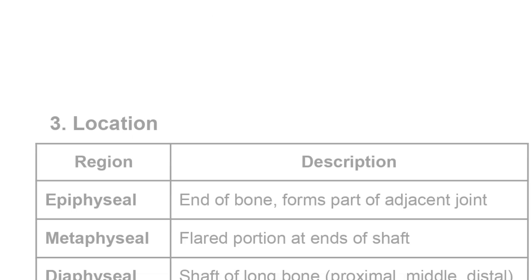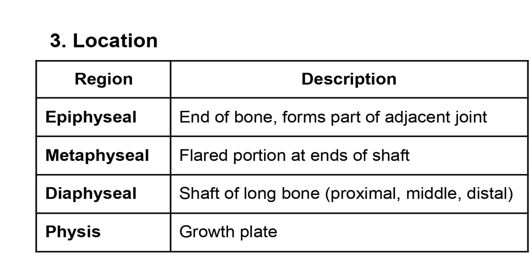Then it gets into location — and it's way more specific than just somewhere in the arm or leg. It really maps out the anatomy. We have the epiphyseal region, which is the end of the long bone and part of the joint. Then there's the metaphyseal region, the wider part where the bone starts to flare out from the shaft. The diaphysis is the shaft itself, and even that is broken down further — proximal, middle, distal — depending on where along the shaft the fracture is.